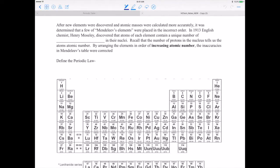Now after new elements were discovered and atomic masses were calculated more accurately, it was determined that a few of Mendeleev's elements were placed in an incorrect order. In 1930, an English chemist Henry Moseley discovered that atoms of each element contain a unique number of protons—kiddos, we know that, don't we?—in their nuclei. Recall that the number of protons in the nucleus tells us the atom's atomic number. So instead of arranging them according to increasing atomic mass, we arrange them now in order of increasing atomic number, and then the few inaccuracies in Mendeleev's original periodic table ended up disappearing.